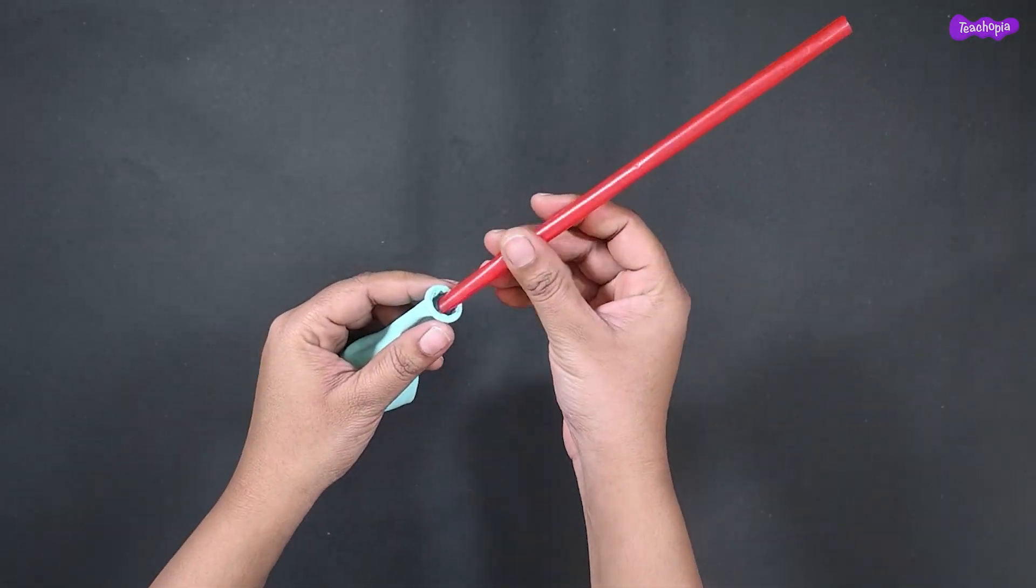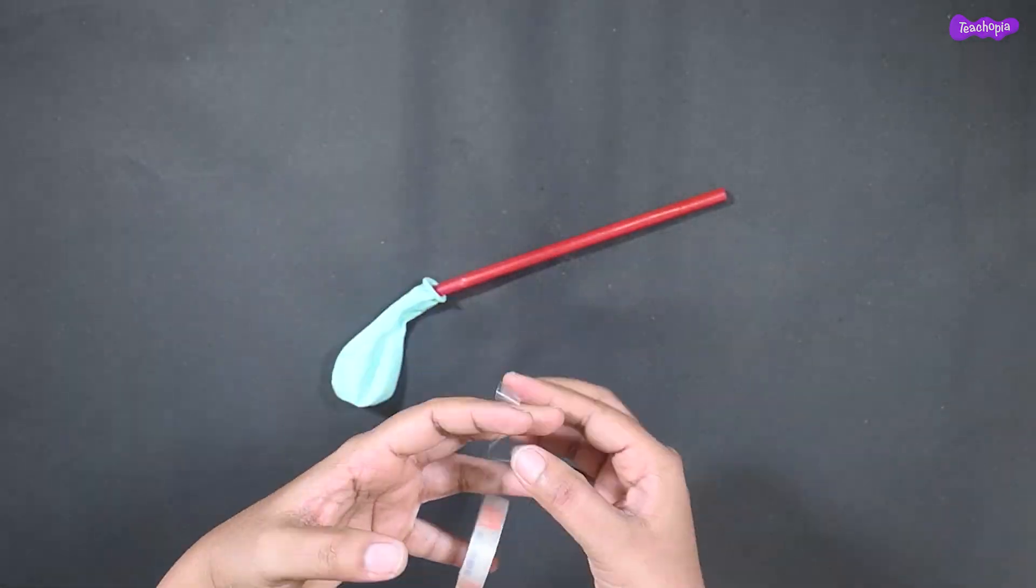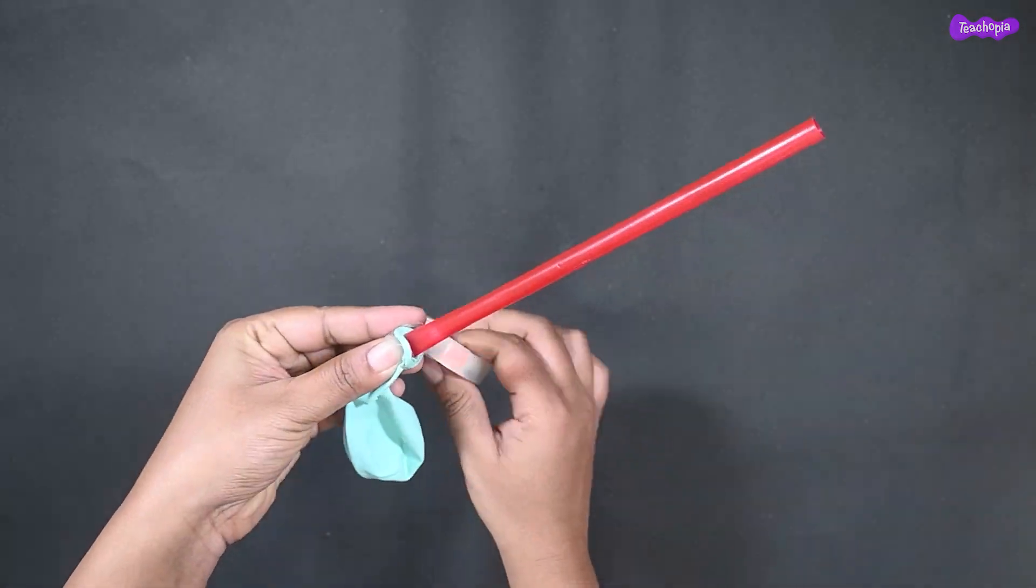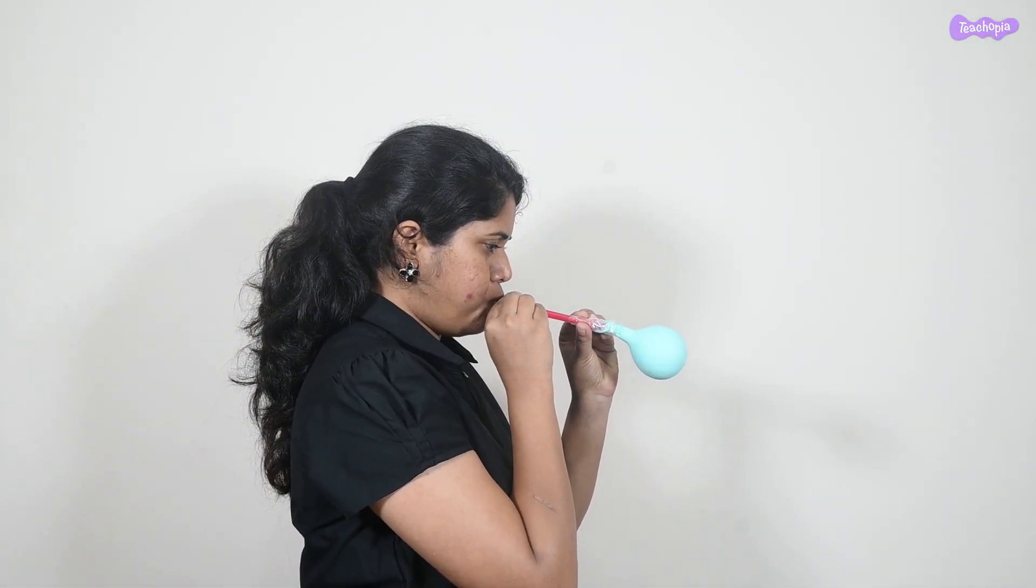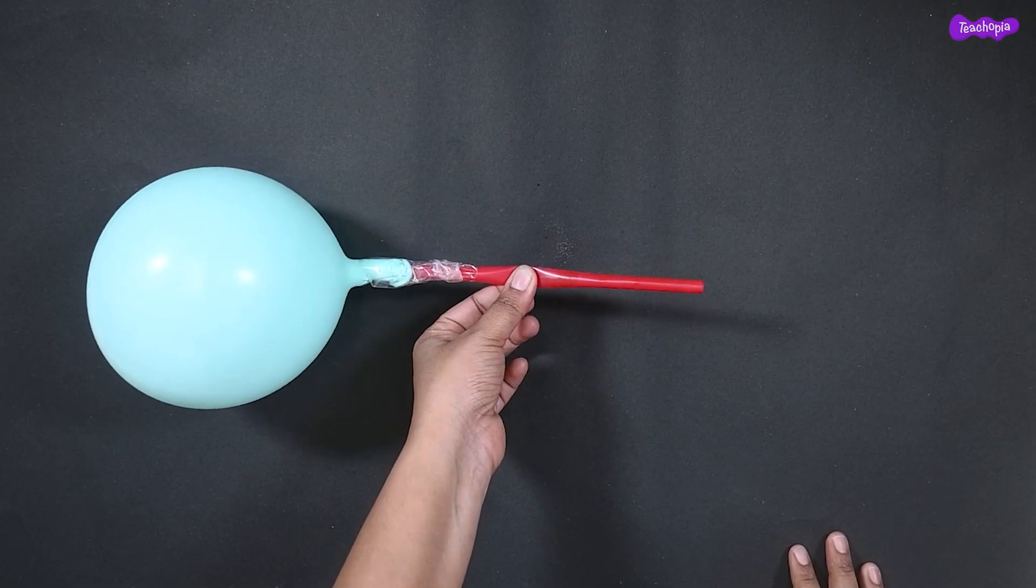Take a balloon and attach it to one end of the straw with cello tape. Blow the balloon and hold it tightly in the middle of the straw.